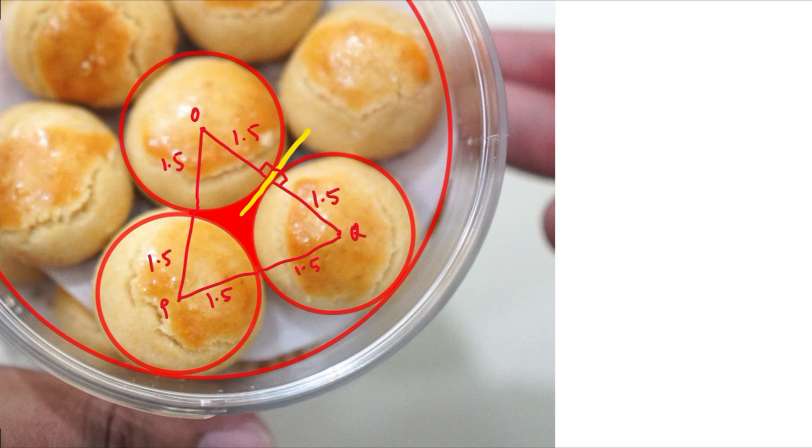And this exact same concept will apply to P, Q and O, P as well. All are straight lines. This means that O, P, Q is an equilateral triangle. And this would mean that the angle, the internal angle is 60 degrees.